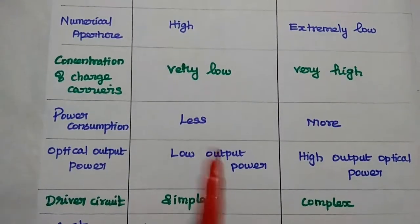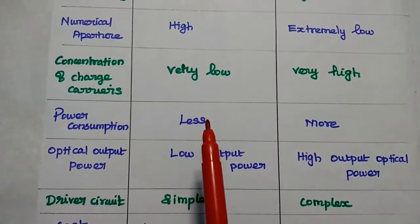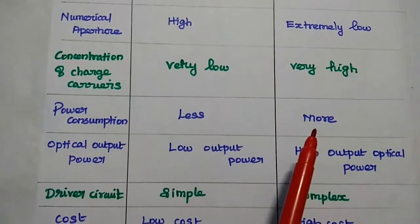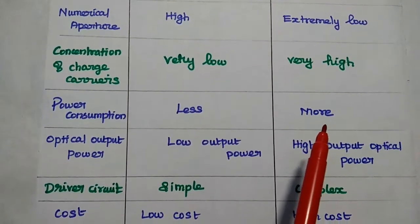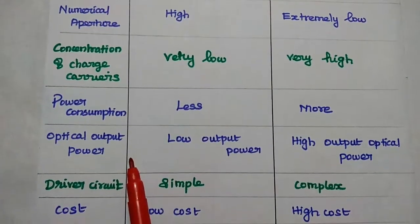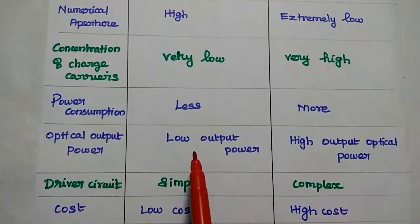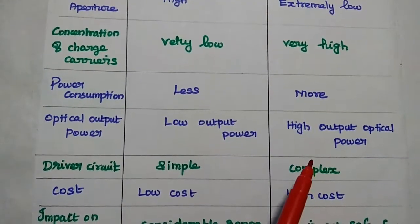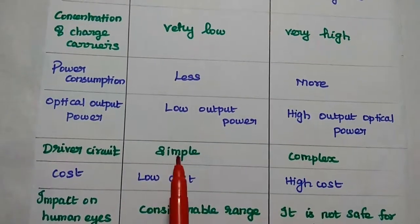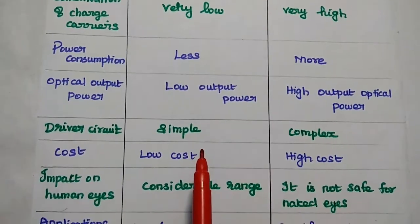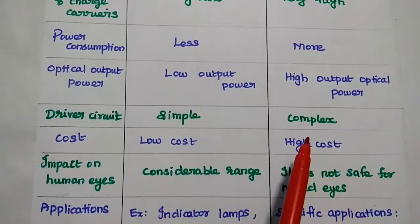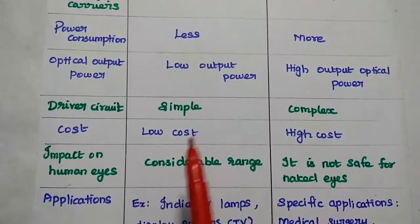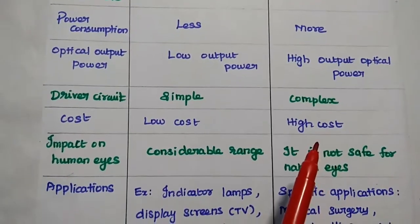The power consumption, that is, less power is required for LED operation. Laser requires more power. But the optical output power is low in LED. For laser, it is very high output optical power. The driver circuit in LED is simple, but for laser it is complex. Cost-wise, LED is low, laser is high cost.